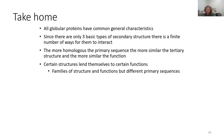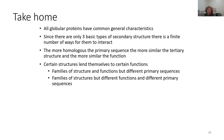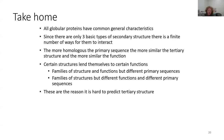Certain structures lend themselves to certain functions, and families of structure and functions — but they have very different primary sequences. Families of structures with different functions and different primary sequences exist, and these are the reason it's difficult to predict tertiary structure.